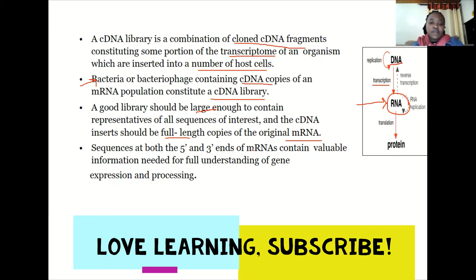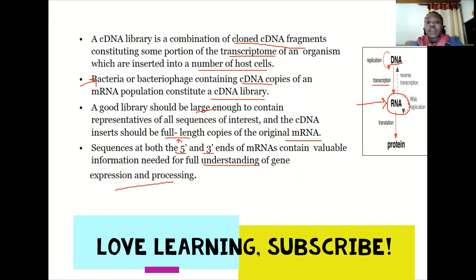Both the 5-prime and 3-prime ends of mRNA contain valuable information needed for full understanding of gene expression and processing — the 5-prime cap and the 3-prime poly-A tail. The flanking regions at both ends are very important, which is why full-length cDNA is required. Without including such sequences, there will be challenges in the study of gene expression regulation.